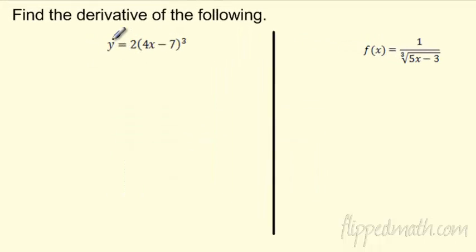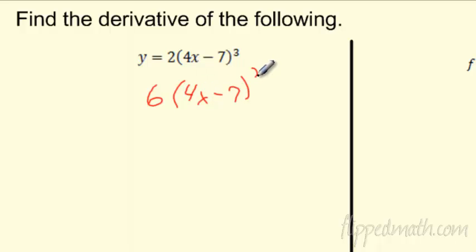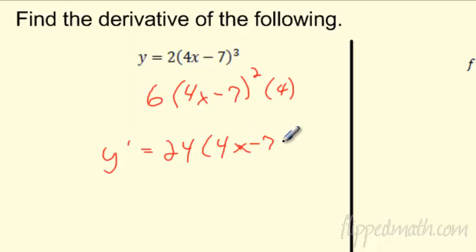Can I take the derivative of this? Sure. Does it matter if I put a number out front? No, not at all. 3 times 2 is 6. You freeze the inside of the grouping symbol, drop that power down, then take the derivative of the inside — that's just 4. So y' = 6 times 4 = 24, and I'm done.